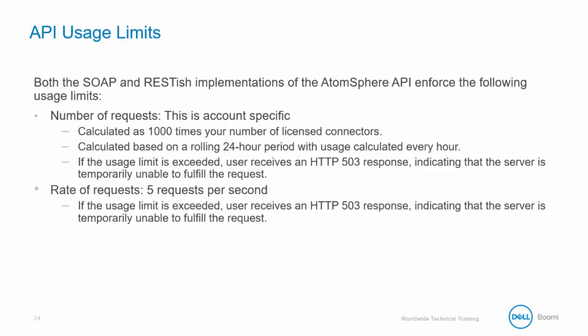Both the SOAP and REST-ish implementations of the AtomSphere API enforce the following usage limits. The number of requests is an account-specific limitation, calculated as 1000 times your number of licensed connectors, based on a rolling 24-hour period with usage calculated every hour. If the usage limit is exceeded, users receive an HTTP 503 response indicating the server is temporarily unable to fulfill the request. The rate of requests is limited to 5 requests per second, and exceeding this limit also returns an HTTP 503 response.